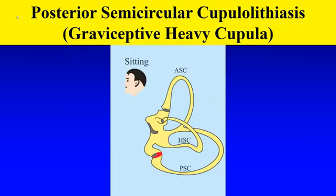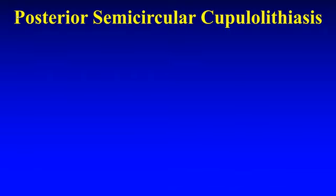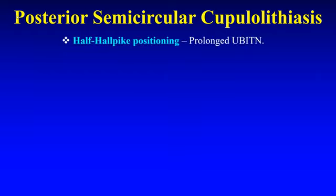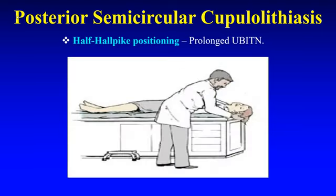The posterior cupulolithiasis or the graviceptive heavy cupula, shown in red here, is best evaluated by the half-Alpike positioning, which often elicits an upbeating ipsi-torsional nystagmus. The Dix-Hallpike testing, in which the head from upright sitting is positioned to around 120 degrees, is not optimal for evaluating the cupulolithiasis.